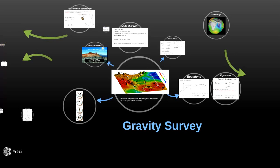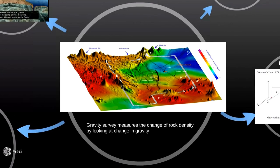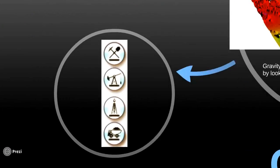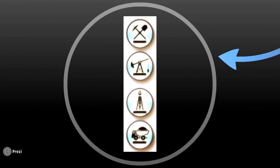During this presentation we will cover basic ideas and some advanced concepts of the method. Gravity Survey measures the change of rock density by looking at changes in the gravity. This technology is used mostly in the minerals, coal, and oil and gas industry.